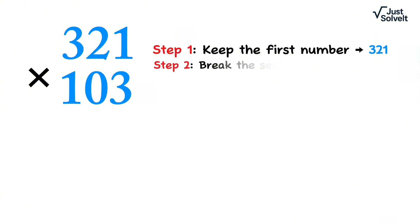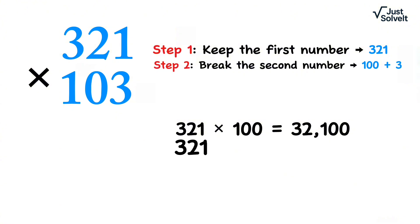Step 2: Break the second number, 100 plus 3. Now multiply. 321 times 100 equals 32,100. 321 times 3 equals 963. Now add them.